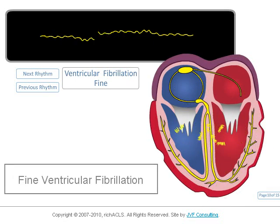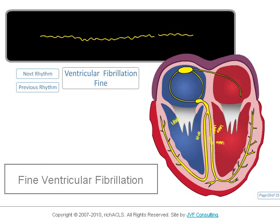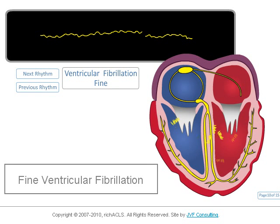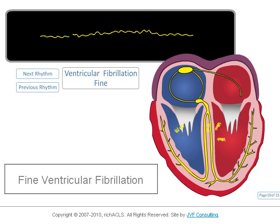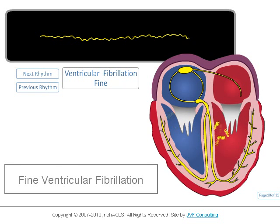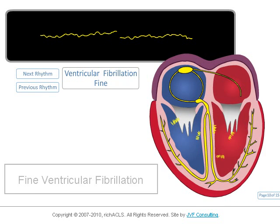Here is fine ventricular fibrillation. Fine ventricular fibrillation follows coarse ventricular fibrillation as the heart muscle depletes its metabolic stores. The probability for successful defibrillation is significantly less with fine ventricular fibrillation.